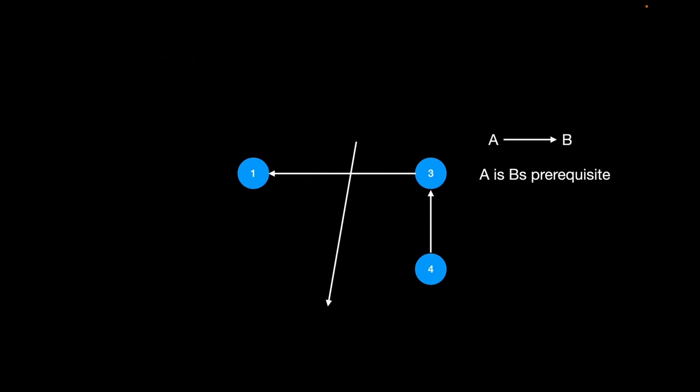What about courses 1, 4, and 3? In order to take 1 you must have taken 4. In order to take 4 you must have taken 3. And in order to take 3 you must have taken 1. There's a cycle — each course requires the other to be taken first. So in such a situation we have a cycle and we can't take these courses.